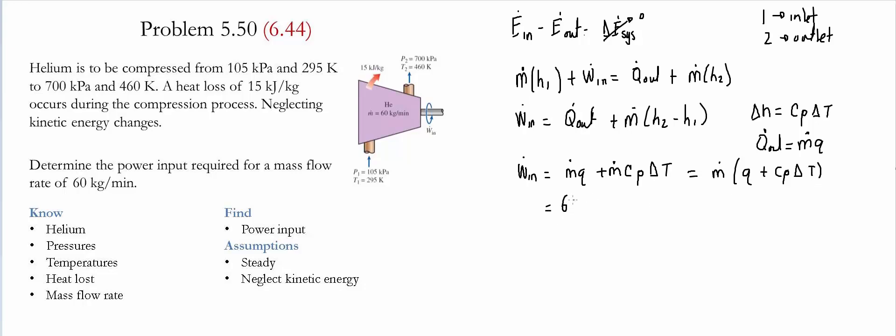The mass flow rate is equal to 60 kilograms per minute and we have that one minute has 60 seconds and then we multiply it by Q. So Q is given as 15 kilojoules per kilogram. The value of Cp for helium is given to be 5.1926 kilojoules per kilogram Kelvin. And then the change in temperature is going to be 460 Kelvin minus 295 Kelvin.